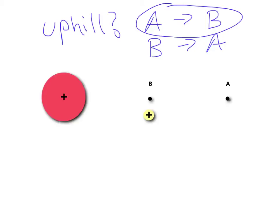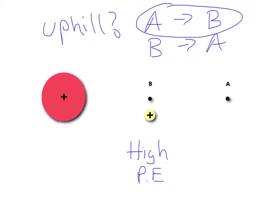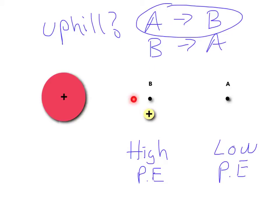That also leads to the next question: which one, A or B, is high potential energy and which is low potential energy? If I have to move from A to B and that takes work on my part — that doesn't happen naturally — then I must be increasing the potential energy of this charge. So uphill is going to be high potential energy, and downhill is low potential energy. When this charge goes from B to A it's going downhill, from high potential energy to low. When I go from A to B I have to do work, going from low potential energy to high. So B is like the higher part of the roller coaster and A is like the lower part, because like charges repel.